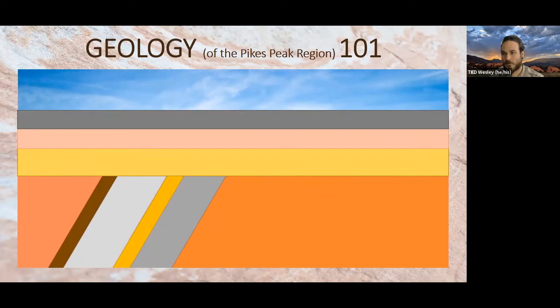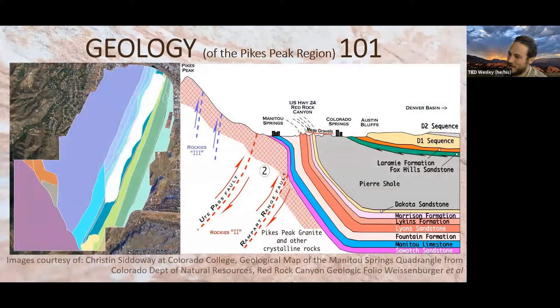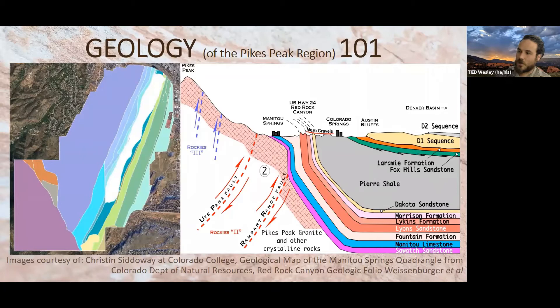Let's look at some diagrams before we get into the actual hike. On the left-hand side are all those different units of rock — for the most part they're almost up and down, those layers going left to right, oldest to youngest, west to east. They represent the layers on the right-hand side of the screen. We start with the Fountain Formation going up through all the others until we get to the Pierre Shale. Austin Bluffs is like the D1 sequence, so we end up with things like the Laramie Formation, Dawson, Arapahoe, and similar units, but since they're not part of Red Rock Canyon we won't talk too much about them.